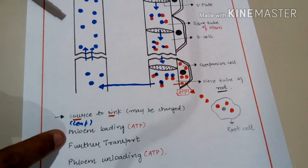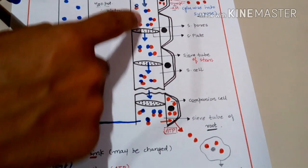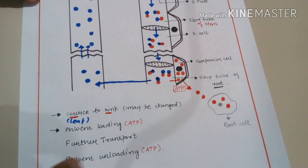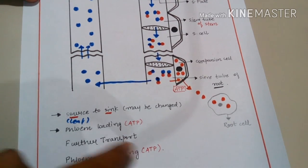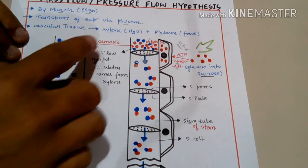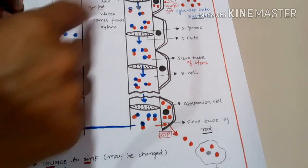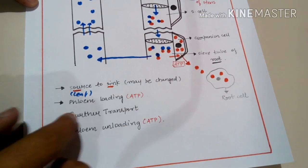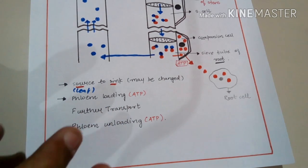To summarize: when sugar molecules are loaded into the phloem, that is phloem loading; when they are released at the destination, that is phloem unloading. Both phloem loading and unloading require ATP since they involve the symplast pathway. The intermediate transport of sugar molecules through the sieve tube — via diffusion and osmosis — does not require ATP and is therefore passive transport.